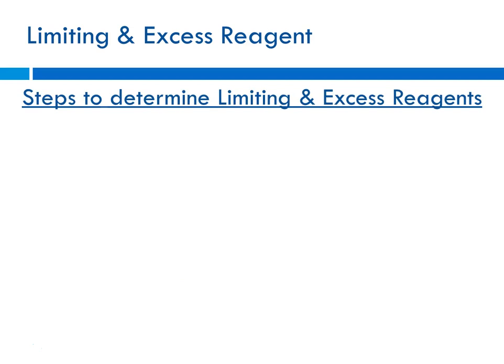Now there are some steps that are helpful in calculating the limiting and excess reagents. First, you're going to set up two problems, and they're often mass-to-mass problems. The one we'll solve today is a mass-to-mass. So the thing that's different about these from ones we've done previously is instead of getting one reactant amount, you're given two reactant amounts.